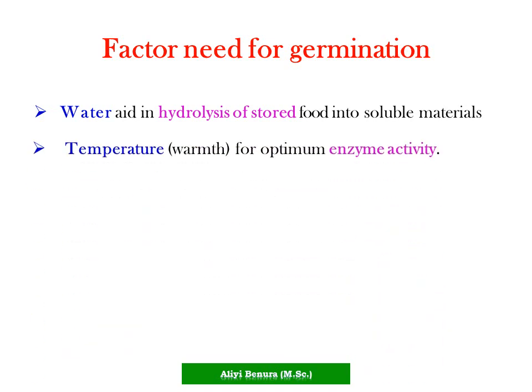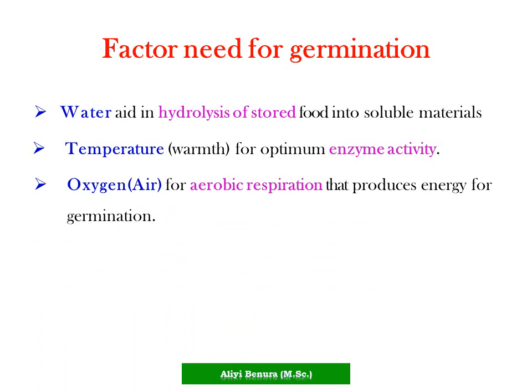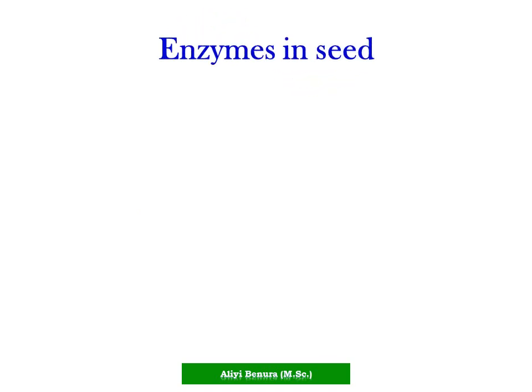The factors needed for germination are: temperature or warmth for optimum enzyme activity; oxygen or air for aerobic respiration that produces energy for germination. So three things must be needed in germination: water, temperature, and oxygen. In place of temperature we can say warmth; in place of water we can say moisture; in place of oxygen we can say air.